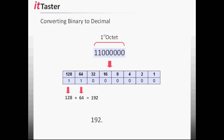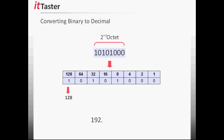We then need to repeat the process for the second octet. We transfer the 8 bits of the second octet to the binary table and then add together the values of each bit that is set to on, which is 128 plus 32 plus 8, which equals 168 — the value of the second octet in decimal.